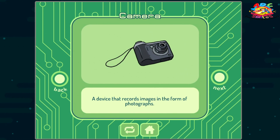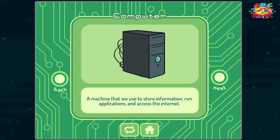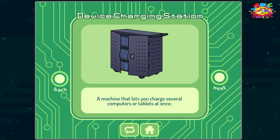Camera: a device that records images in the form of photographs. Computer: a machine that we use to store information, run applications, and access the internet. Device charging station: